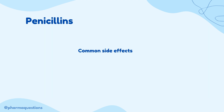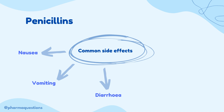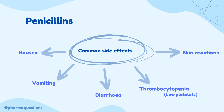Now let's look at some common side effects. Here we have the typical nausea, vomiting and diarrhea. These usually occur because antibiotics affect the good and the bad bacteria, so they cause disturbances in the stomach and intestines. Other side effects include thrombocytopenia, which means low blood platelet counts, and also skin reactions.